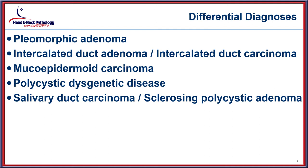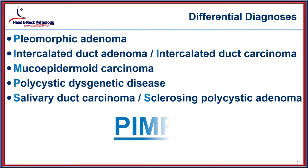Whenever I have a case like this I consider a wide variety of salivary gland lesions. These include benign lesions like pleomorphic adenoma, intercalated duct adenoma, and polycystic dysgenetic disease, as well as carcinomas like intercalated duct carcinoma, mucoepidermoid, and salivary duct carcinoma, while sclerosing polycystic adenoma is also considered. Taking the first letters of all these names spells out PIMP, which is the diagnostic mnemonic for today.